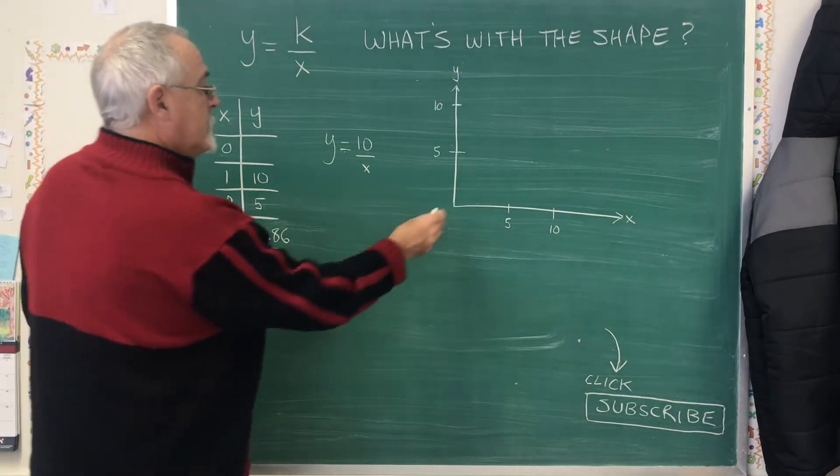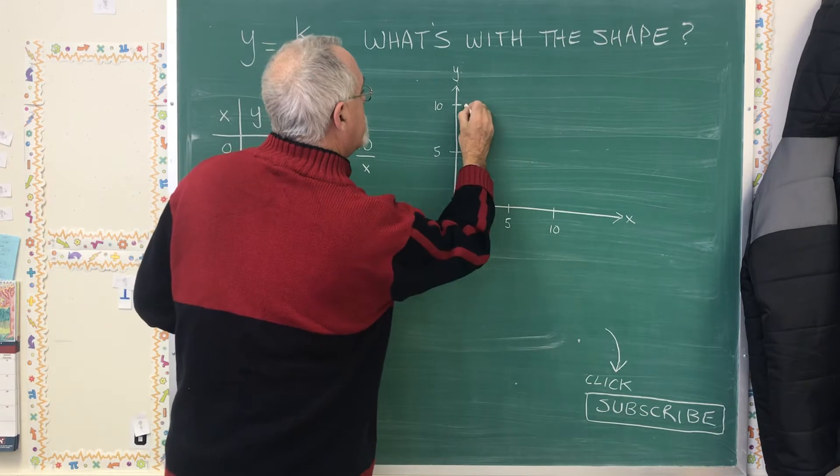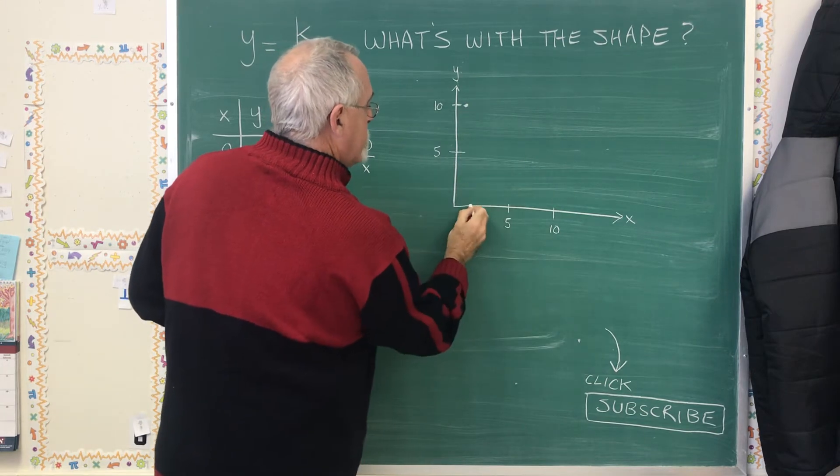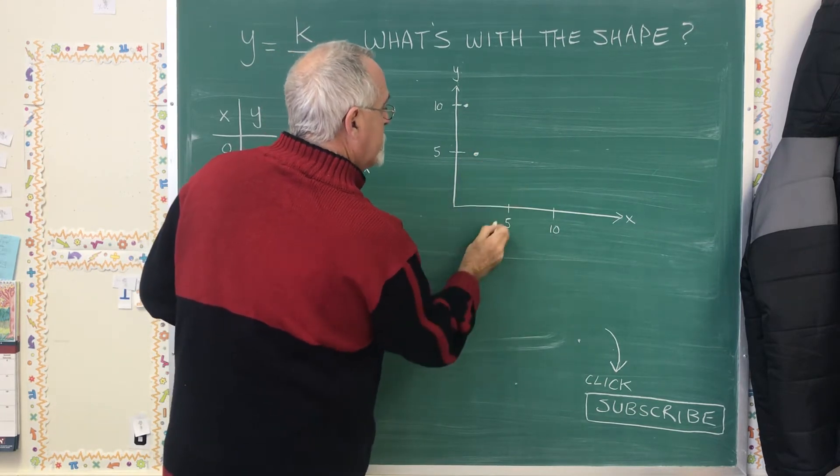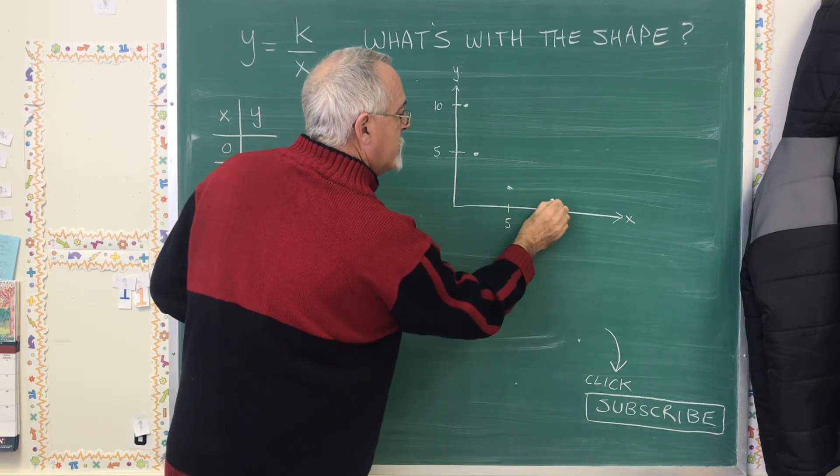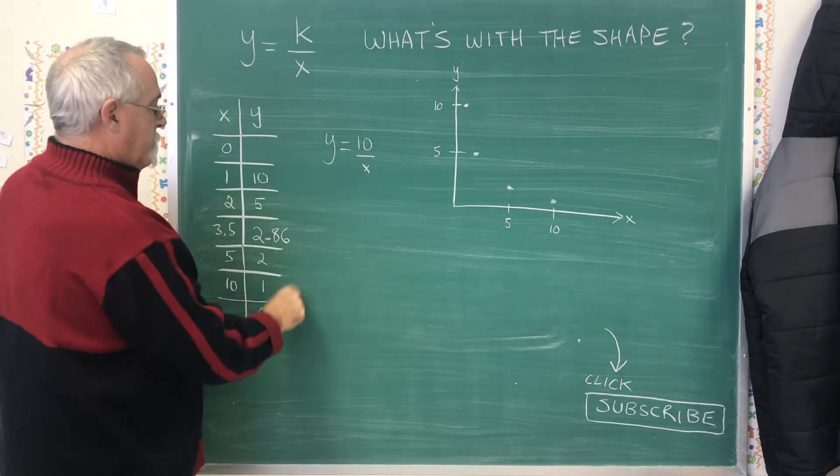When we graphed these, the point 1, 10 is going right here, 2, 5 is going here, 5, 2 is going here, 10, 1 is going here. I've graphed these four points.